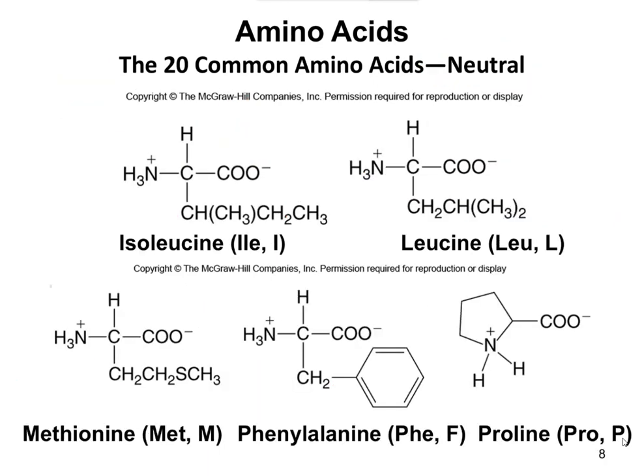Isoleucine and leucine are constitutional isomers — they have the same chemical formula but are organized differently. Methionine also contains a sulfur atom, but it cannot form disulfide bonds like cysteine because it has an SCH3 group rather than an SH group.